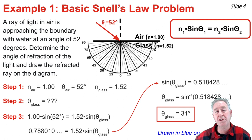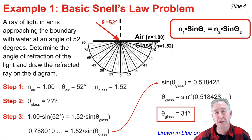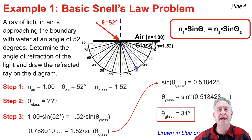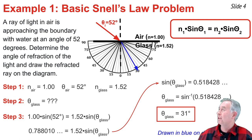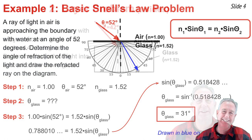Now it's time to draw the ray on the diagram. I lay a protractor on top of my diagram so that the origin of that polar coordinate protractor is at the point of incidence of the light ray to the boundary. Then I measure from the normal line 31 degrees out to the right side and draw my refracted ray. There you see it — I'm done.